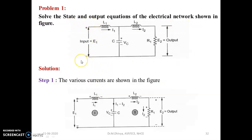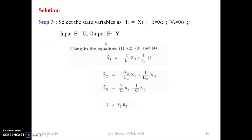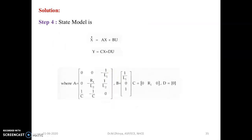If an electrical or mechanical system is given, the first step is to identify the physical variables. For an electrical network, identify the number of meshes or nodes, the input, and the output. The second step is listing the mesh or nodal equations. The third step is selecting the state variables, input variables, and output variables. After that, substitute them into the equations and generalize the state model.